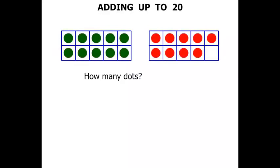Five, ten, fifteen, and four more makes nineteen.